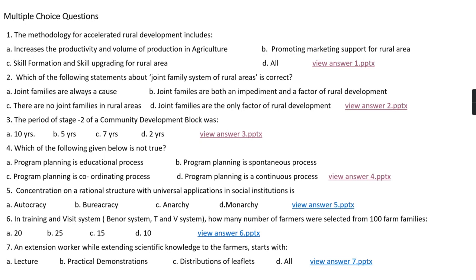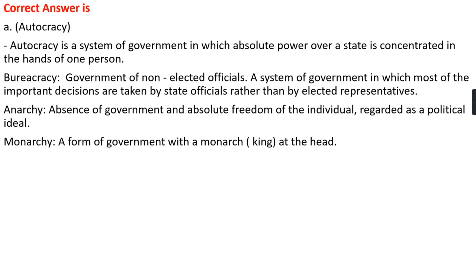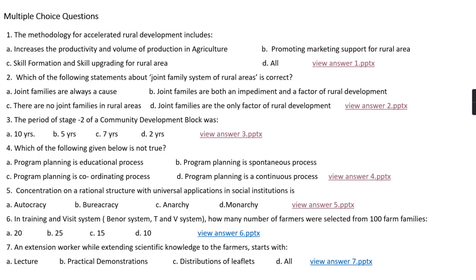Question number five: Concentration on a rational structure with universal application in social institution is option A, autocracy; option B, bureaucracy; option C, anarchy; option D, monarchy. The right answer is option B, bureaucracy. Autocracy is a system of government in which absolute power is given in the hand of one person. Bureaucracy is also known as government of non-elected officials where most important decisions are taken by state officials rather than elected representatives. Anarchy is a condition where there is absence of government, and monarchy is a form of government in which at the head position is a monarch or king.